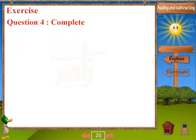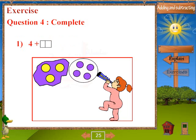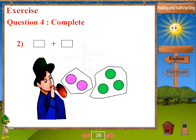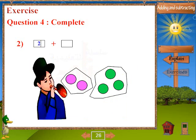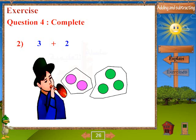Question 4: Complete. 1. 4 plus 8. Plus 3 plus 2.